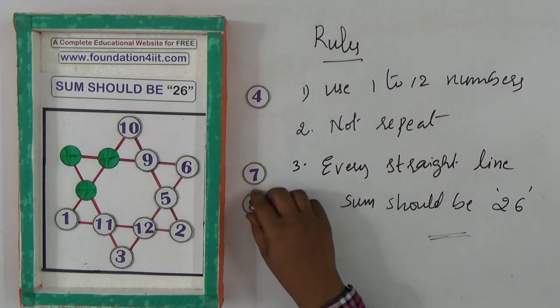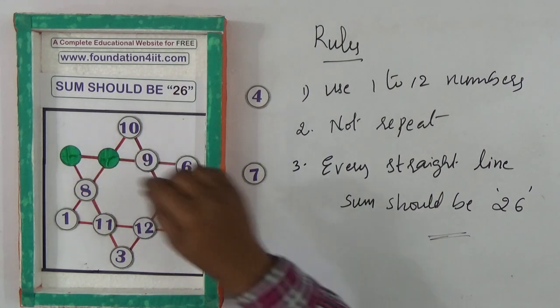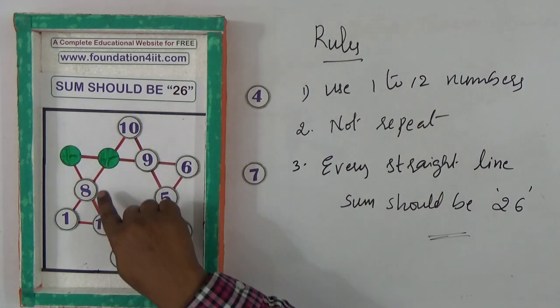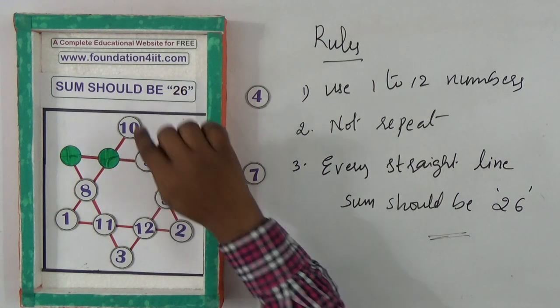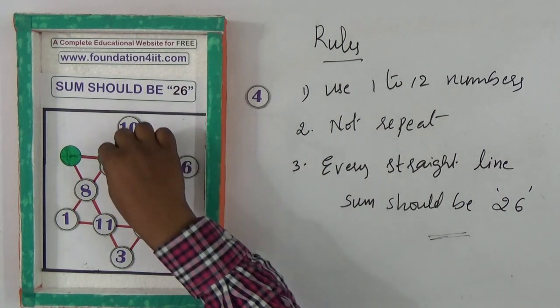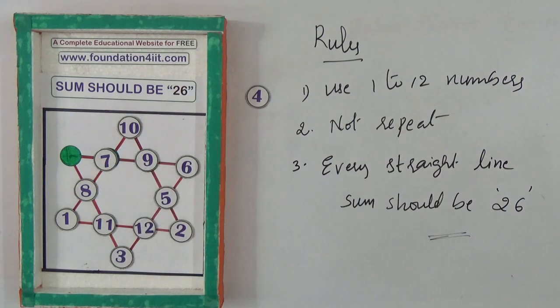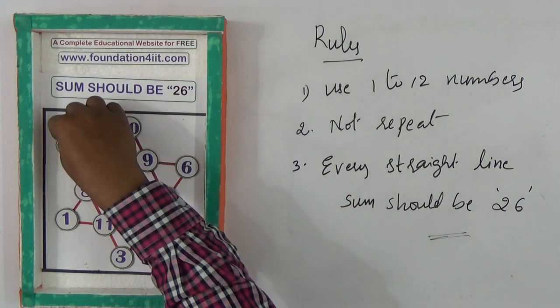1 plus 8 is 9, 10 is there - 19, so we need 7, that's 26. And 4 is left, keep it here and check. Remain...